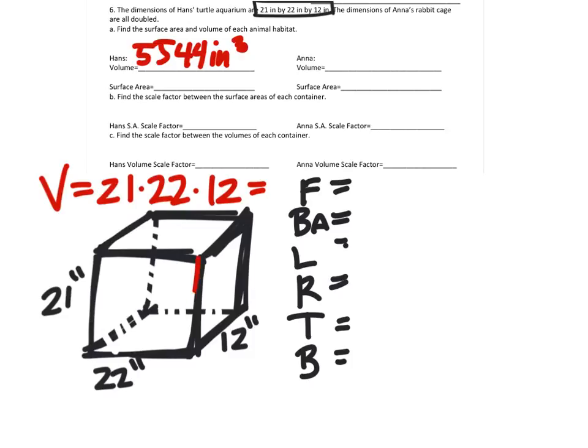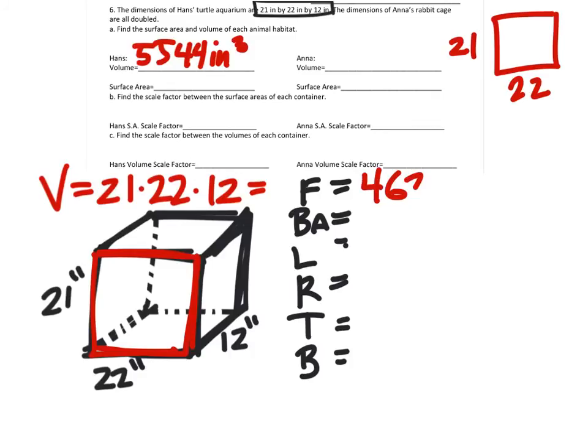Let's start with the front, which would be this face right here. I'll draw it up here. It's a twenty-one by twenty-two rectangle. When I multiply those two, I get my surface area for the front as four hundred and sixty-two square inches. And the back would match that because it's a rectangular prism.